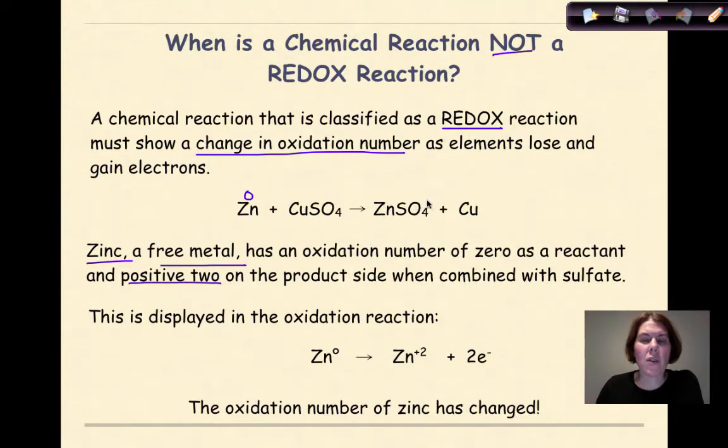So I look over here and I know that the sulfate is minus two as a polyatomic, therefore the zinc must be a plus two. We can write an oxidation half reaction showing this. So here we have Zn zero yields Zn plus two and the two electrons being lost. In other words, the oxidation number of zinc has changed. It's gone from zero to plus two.